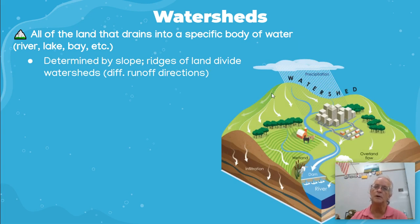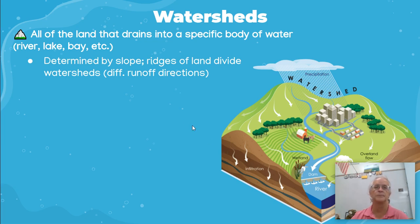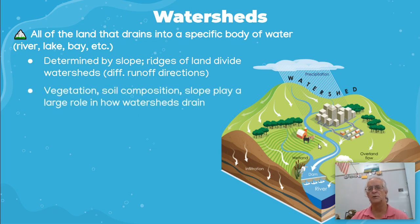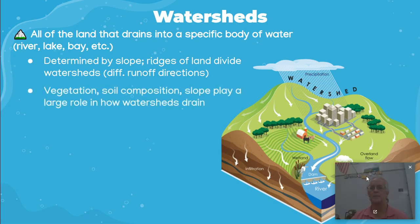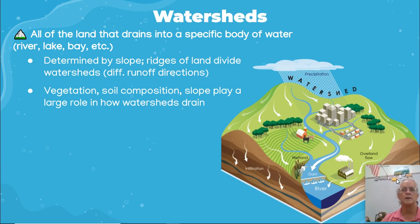If you look here, we have one runoff over to the left, one runoff over to the right, and this is a runoff down into this area. The vegetation, soil composition, and slope play a large role in how watersheds drain.